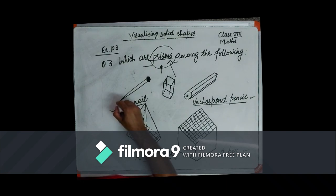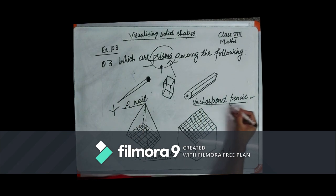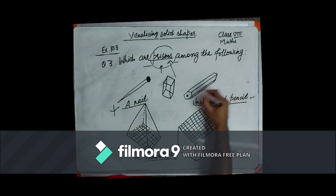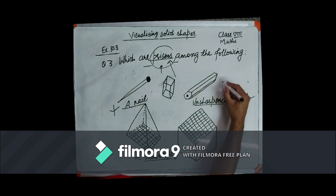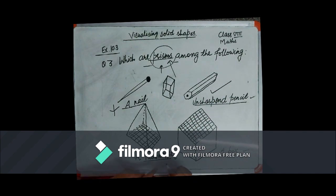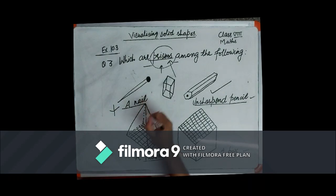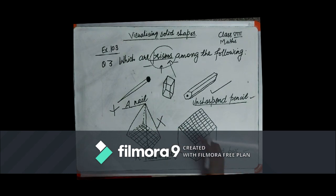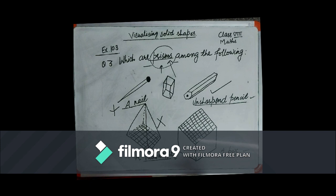The first one is a nail — it has a vertex and a circle, so it does not belong to the prism family. The second one is an unsharpened pencil, which has the same base and top, so it belongs to the prism family. Next is a table top having a quadrilateral at the base and a vertex at the top, so it belongs to the pyramid family, not the prism family. And a box — a cubical or cuboidal box — has the same congruent base and top, so it also belongs to the prism family.